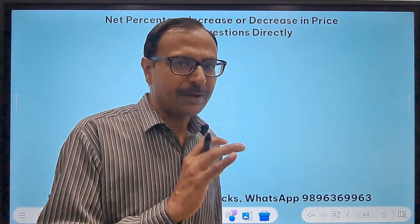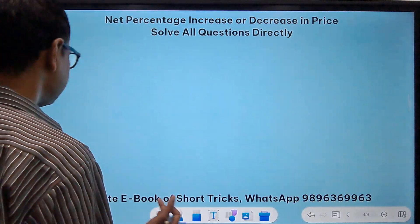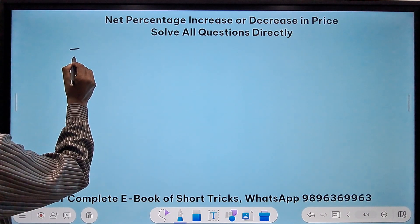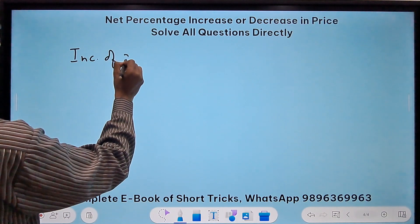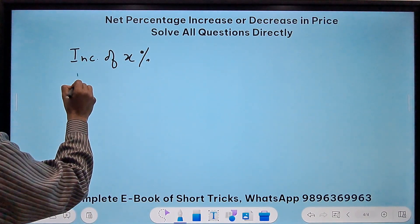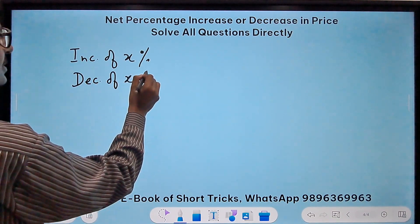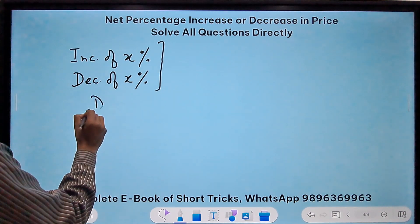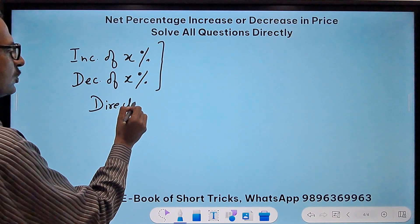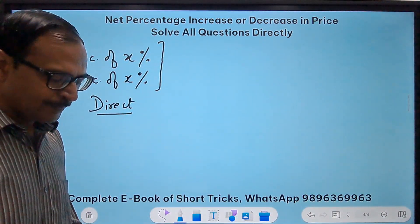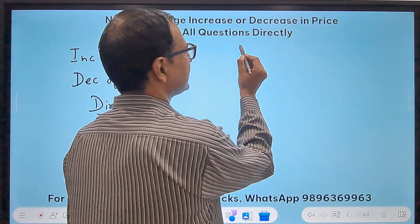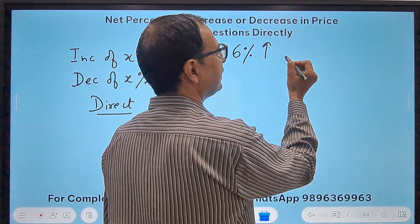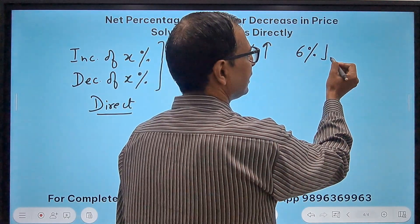Let's get on with the final part, the last case. In the last case, we have an increase first of x percent and then decrease of the same percentage, decrease of x percent. So now there are no two values, you have a single value. I will solve this using the direct approach and the traditional approach. Let's consider 6 percent as the value. So first the value increases by 6 percent and subsequently it decreases by 6 percent.